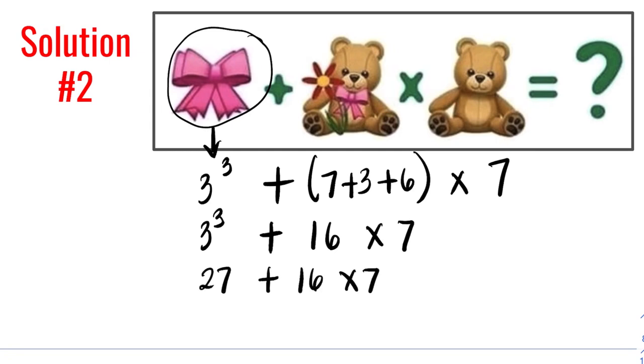Next, we need to simplify 16 times 7, which is 112. And then we add 27 plus 112, which is 139.